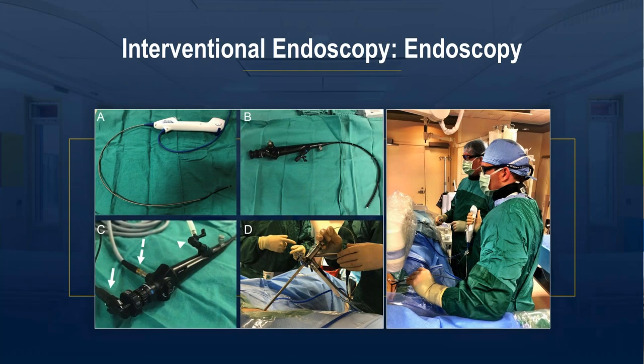Here are a few scope examples again. A is the disposable LithoView scope — single use, about $1,500. B is the workhorse 16.5 French scope, sterilizable and reusable in almost any system: biliary tree, gallbladder, GI system, or genitourinary system. C shows the standard setup: camera attachment, light source, and saline/working channel. D is the rigid endoscope setup. The final image shows the reusable endoscope in use with one of our baskets.